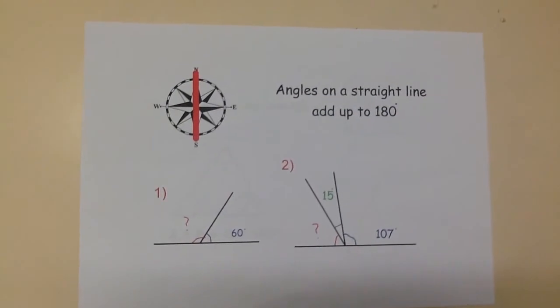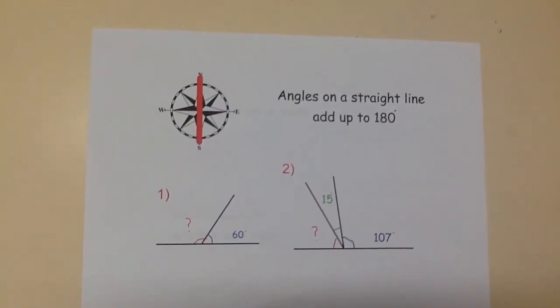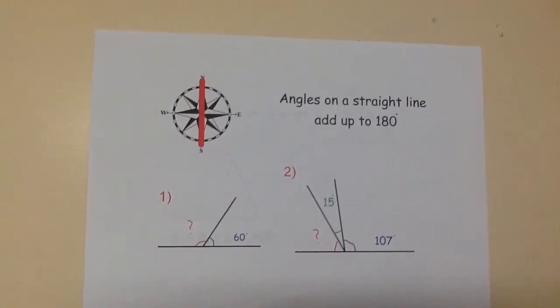There are 180 degrees in a half turn, or on a straight line. Again, to calculate the missing angle, we must subtract the angle we are given from 180.